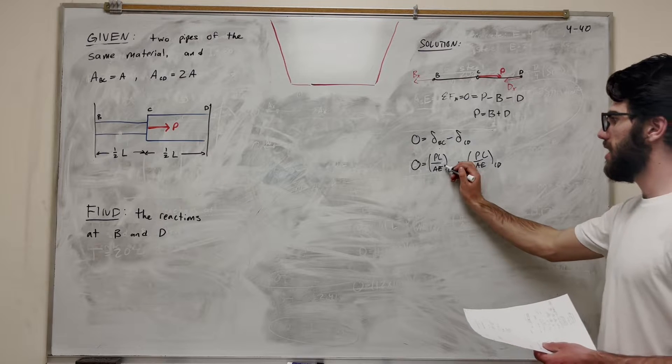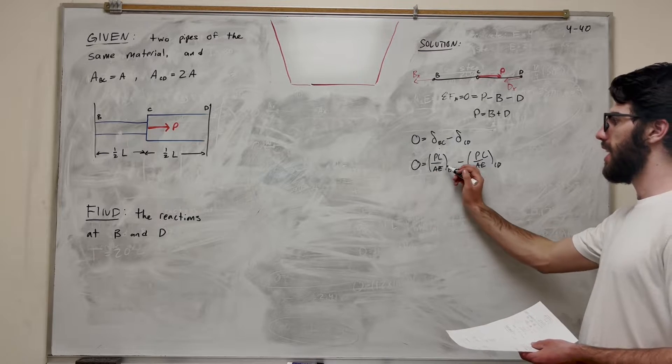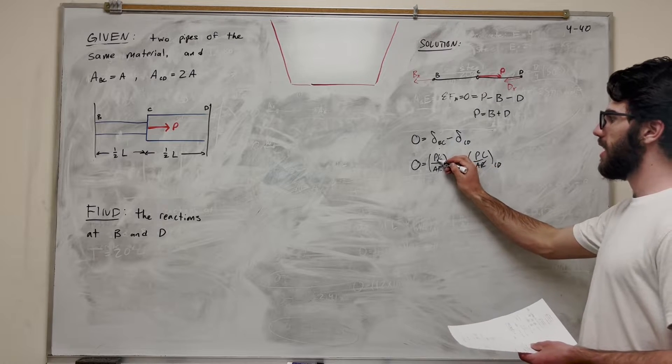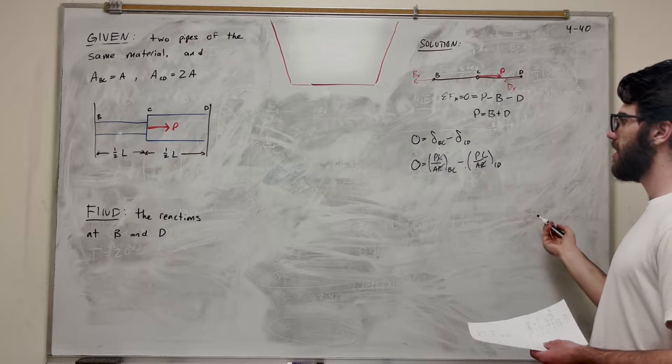So how about E? So E and E, we can divide that or we can divide it from both sides and those are the same. So they're going to cancel. And then length, length is the same. They're both one half length. Those are going to cancel.